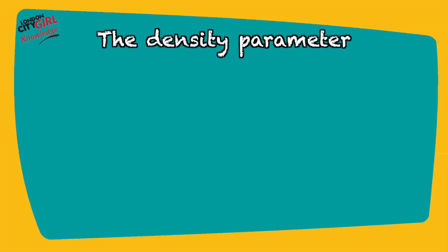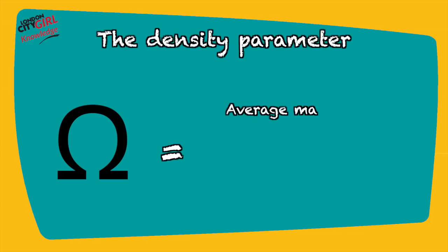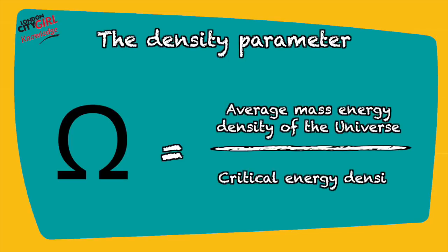The density parameter, symbolized by the letter omega in the Greek alphabet, is used to determine what curvature the universe has. It is the average mass energy density of the universe divided by the critical energy density.